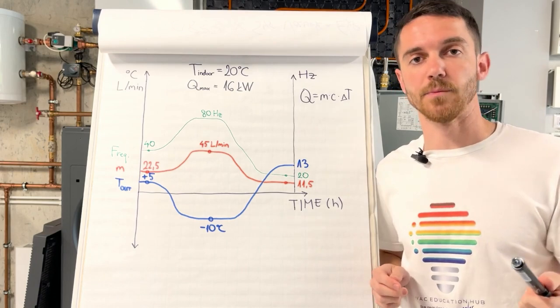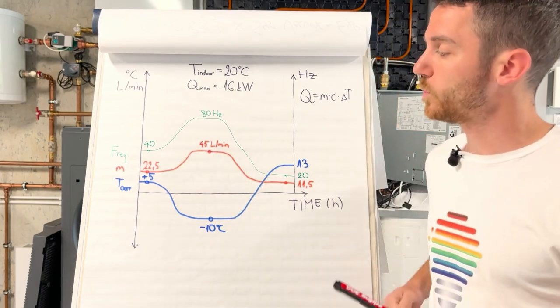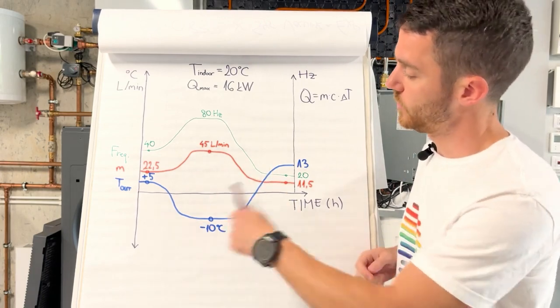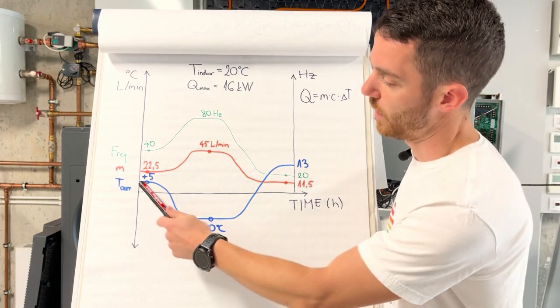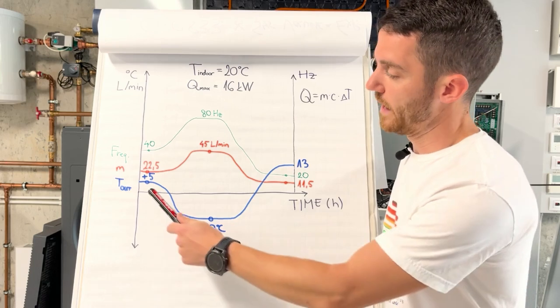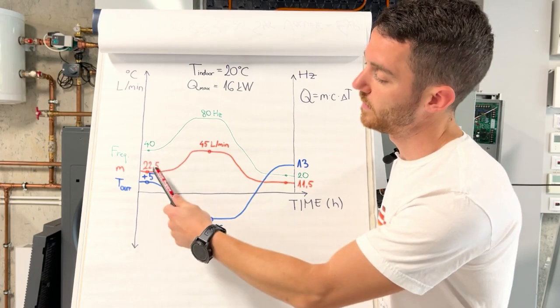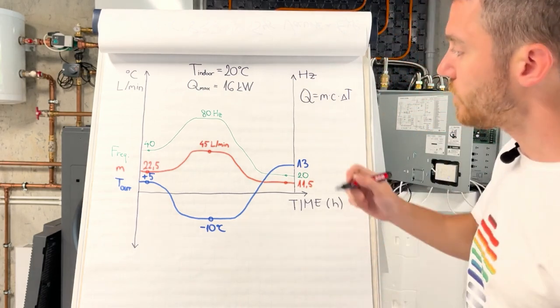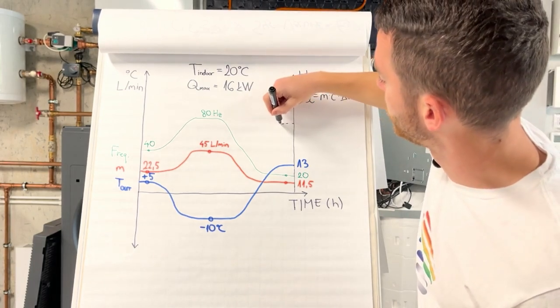But remember, this maximum is for maximum flow rate when our outdoor is minus 10. It's shown on the left and on the right. On the left, if our outdoor temperature is plus five degrees, probably most of the winter, we don't have 45 liters per minute. We need and we have 22.5 liters per minute.